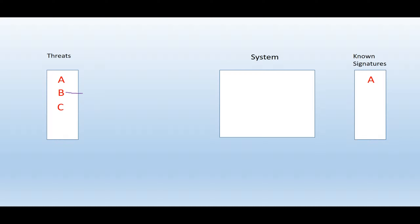If an attacker decides to use a new attack, let's say threat B, the system will compare this with previously known signatures, so B will be compared with A. These two are different, and since this is something we haven't seen before, it's likely that it's not malicious. So threat B will be able to execute its code and potentially harm your system. Again the system will realize this is bad and create a profile or signature of threat B, adding it to its list of known signatures.